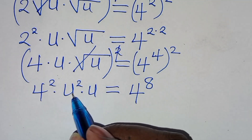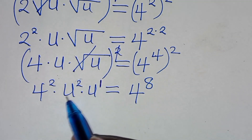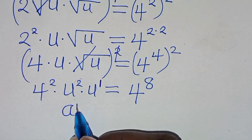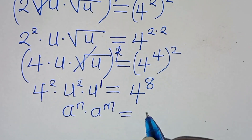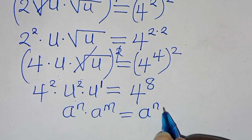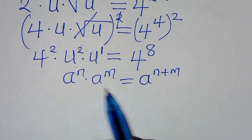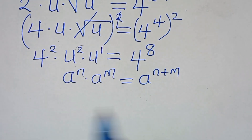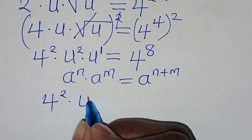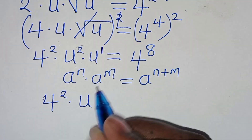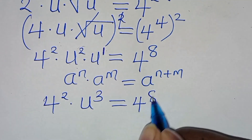So we have u raised to the power of 2 times u. Remember this u is raised to the power of 1. This is in the form of a raised to the power of n times a raised to the power of m, which we can express as a to the power of n plus m. Applying this exponent property, we have 4 raised to the power of 2 times u raised to the power of 2 plus 1, which is 3. This is equal to 4 to the power of 8.